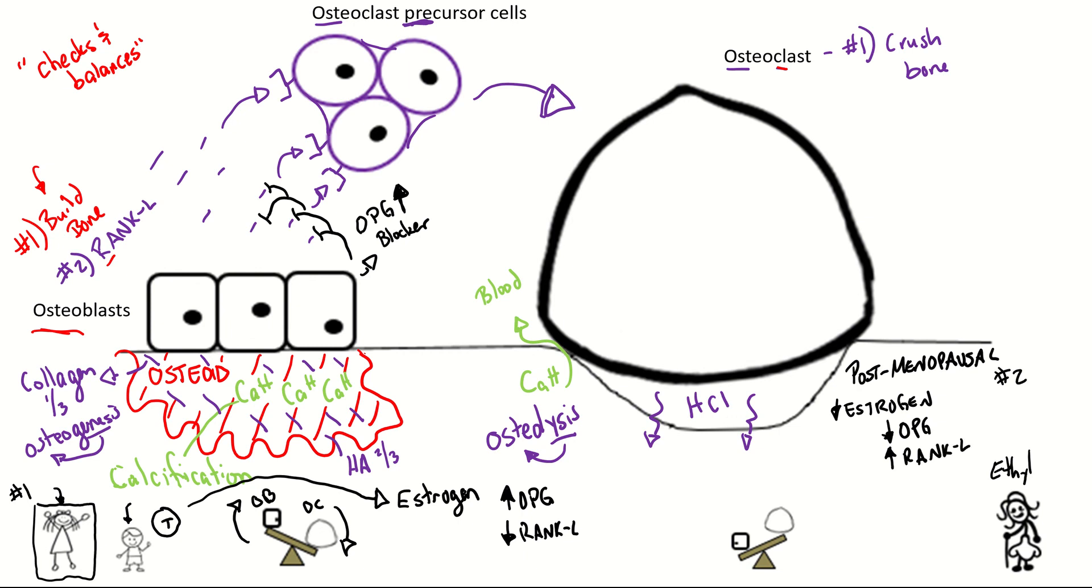And if we have more RANK-L keys, we're going to create more osteoclasts than osteoblasts. So the osteoclasts are winning on this ratio. So you're going to crush the bone more.